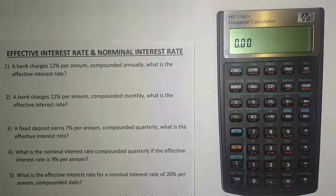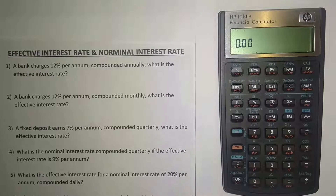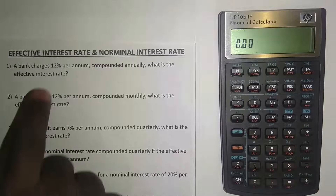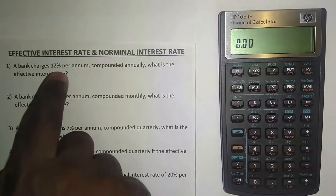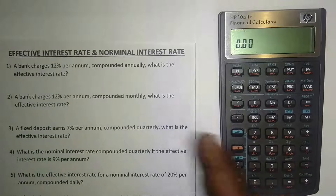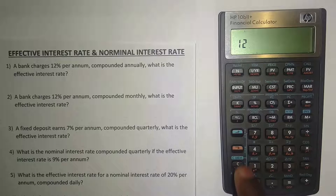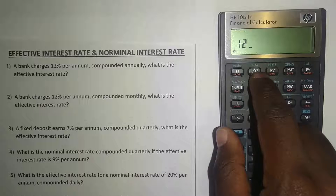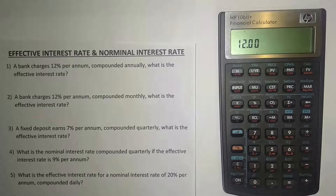Let me show you how it works with this calculator. The first thing you need to do is put in the nominal interest rate. This example says a bank charges 12% per annum compounded annually, so 12 is your nominal interest rate. Put in 12, then press the orange button and then press I/YR — you can see underneath it says 'nominal percentage'. Then put the payments per year: it's annually, so press 1, then the orange button, then P/YR.